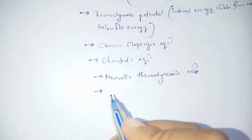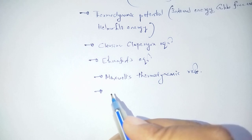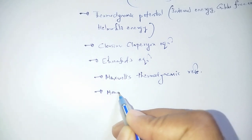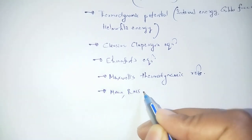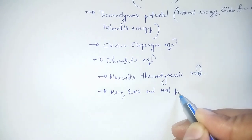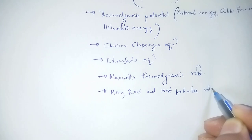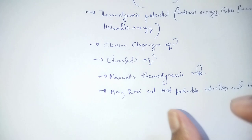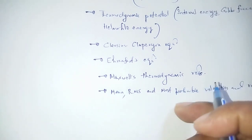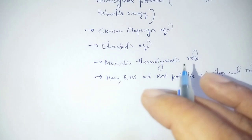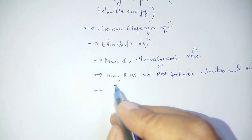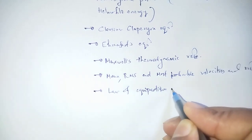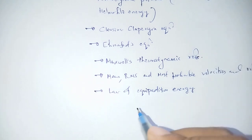Next we are going to discuss kinetic theory of gases: root mean square (RMS) velocity, most probable velocity, mean velocity, and the relations among them. Also, the law of equipartition of energy and degrees of freedom.